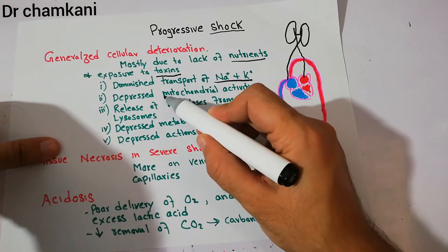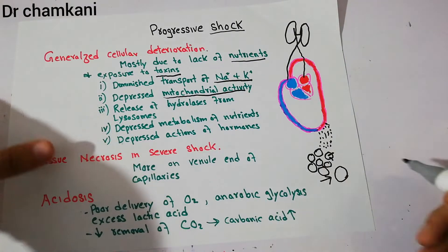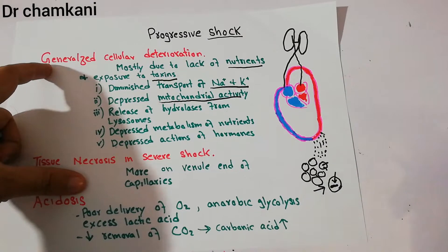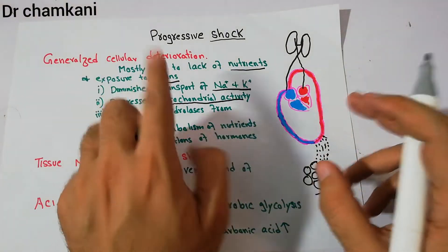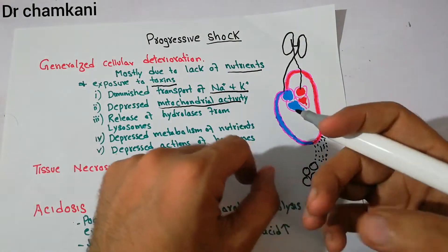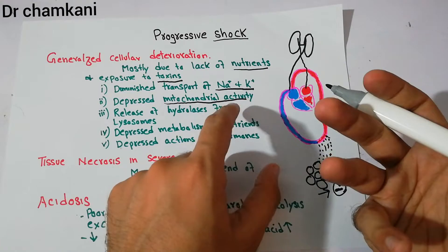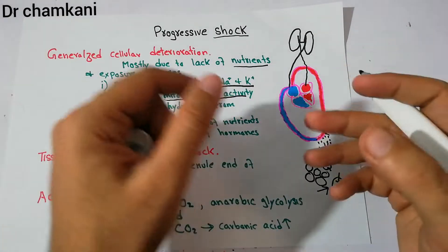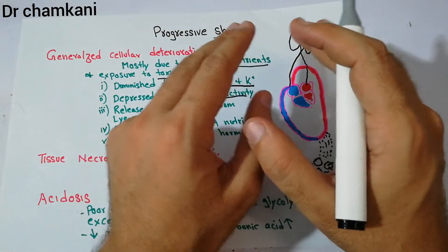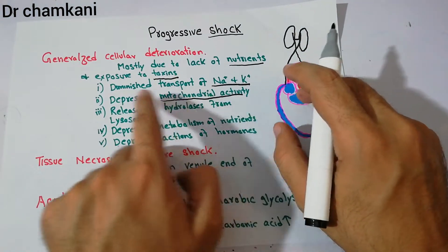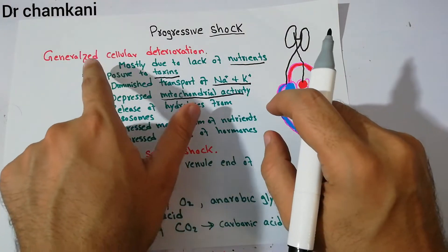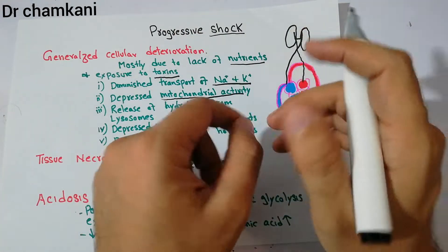The second factor is depressed mitochondrial activity. Mitochondria normally help produce energy from glucose and other nutrients, acting as the powerhouse of the cell. Due to lack of nutrients and exposure to toxins, mitochondrial activity is diminished and they are unable to extract energy. When severe shock occurs, mitochondrial functions are depressed, contributing further to generalized cellular deterioration.